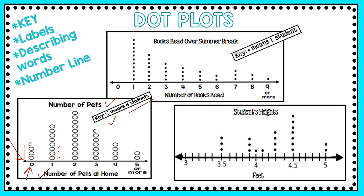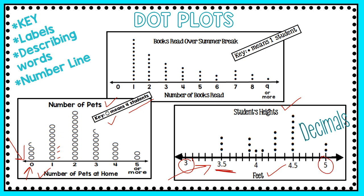On this next dot plot, you can see it's about student heights measured in feet, and it has decimals. You're going to be reading dot plots with decimals. The number line starts at three and goes up to five. You can see that the number of students who were three and a half feet tall — three and five tenths feet — was three students.